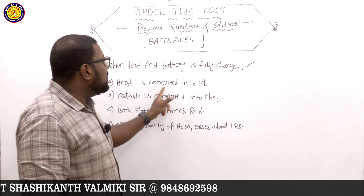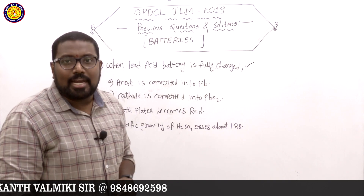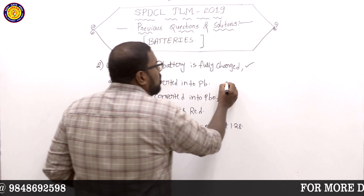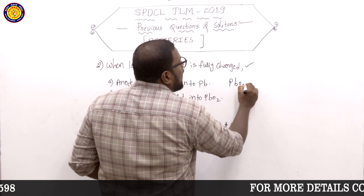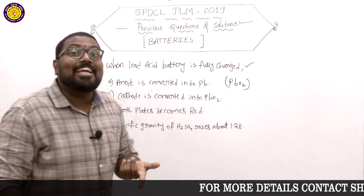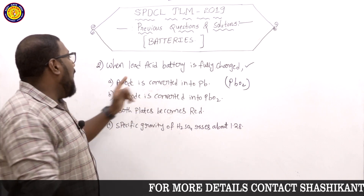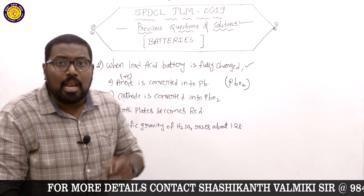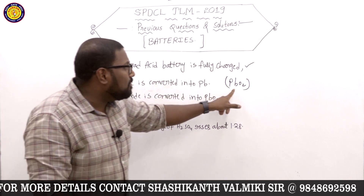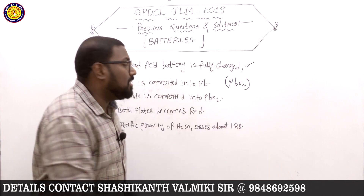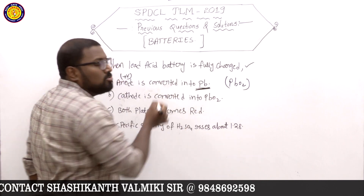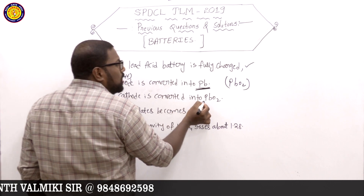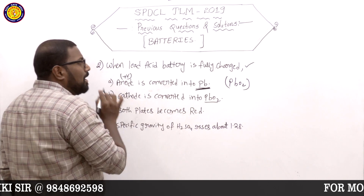First option: anode is converted into Pb. That is wrong. The correct statement is that anode is converted into PbO2, that is lead oxide. Anode means positive terminal. So option stating anode converts to PbO2 is correct. Second option: cathode is converted into PbO2 — this is also wrong, because cathode is the negative terminal.